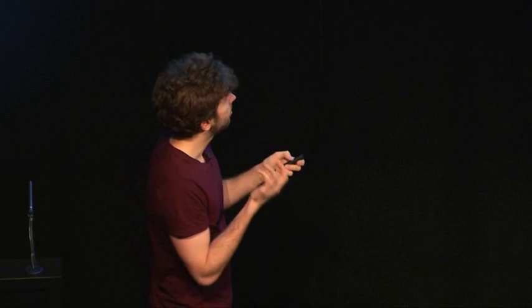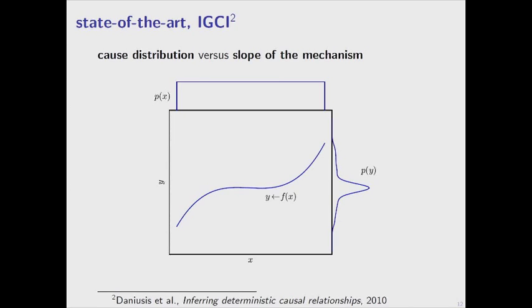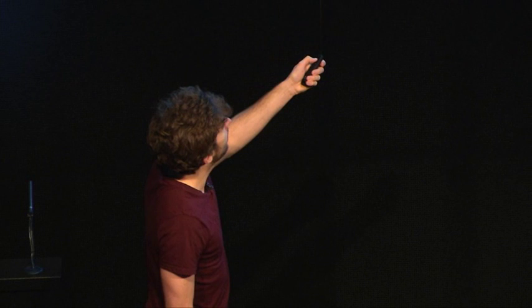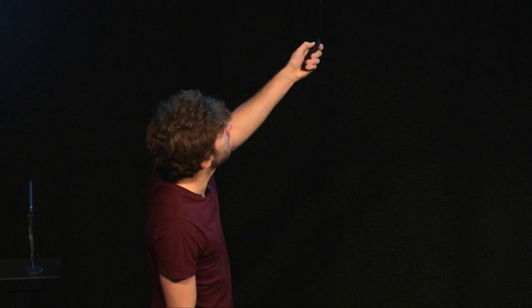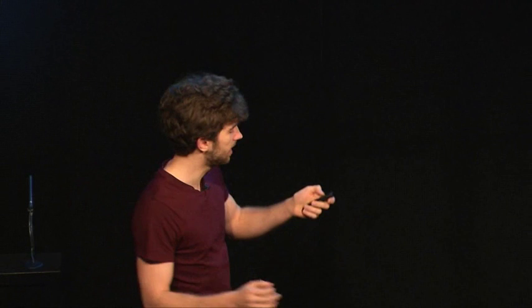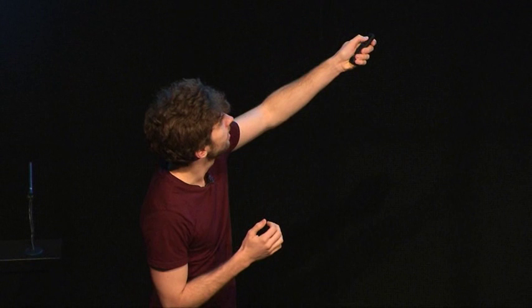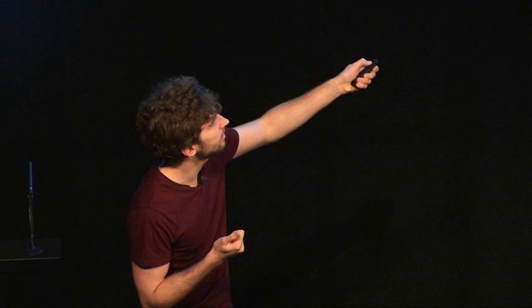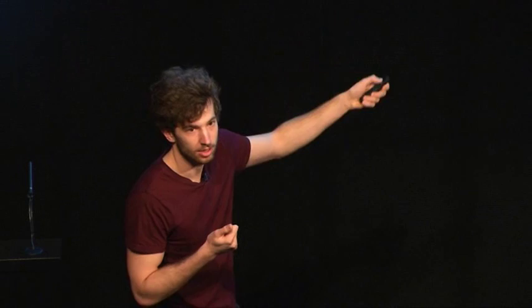For the two-variable case, one method is information geometrical causal inference (IGCI), which extracts cause-effect relationships connected by deterministic and invertible relationships. It assumes the cause is generated independently from the mechanism mapping it to the effect. If the cause has a uniform distribution and the function is generated independently, it is unlikely to find correlations between the slope of the function and the density of the input. Regions of low slope get translated into regions of high density — this asymmetry is a footprint for causal inference.